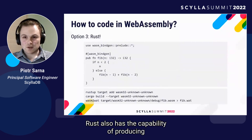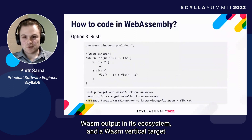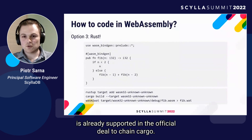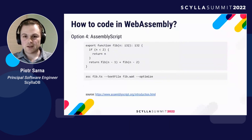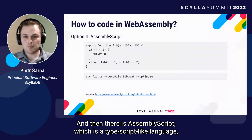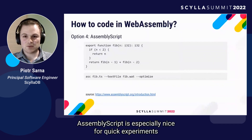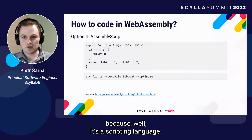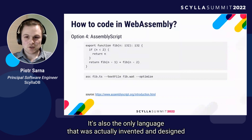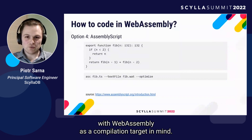Rust also has the capability of producing WASM output in its ecosystem, and a WASM32 target is already supported in the official build toolchain, Cargo. And then there's AssemblyScript, a TypeScript-like language which compiles directly to WebAssembly. AssemblyScript is especially nice for quick experiments and is the only language actually invented and designed with WebAssembly as a compilation target in mind.